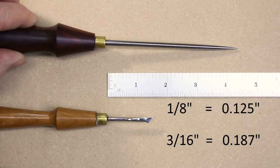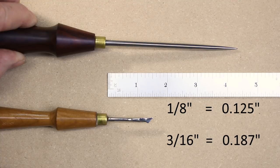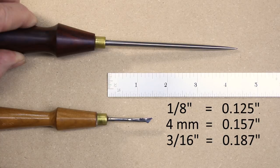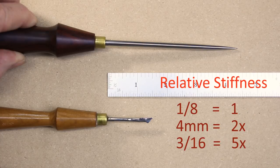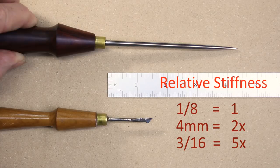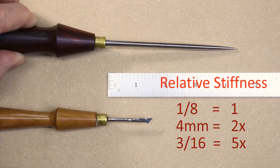Here's a little tip. If your supplier doesn't stock any fractional sizes between 1 8th and 3 16ths, look for metric sizes. 4 millimeters is almost exactly halfway in between. It's twice as stiff as 1 8th, while 3 16ths is five times as stiff for the same length.